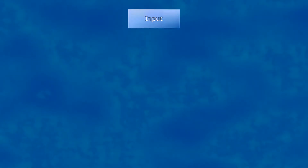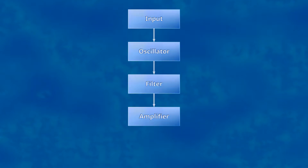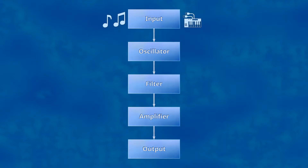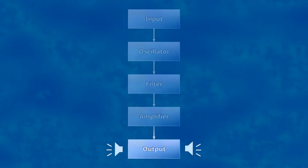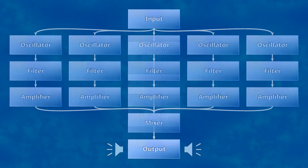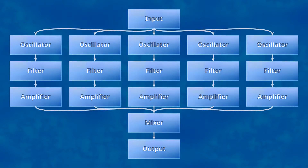We'll need something to tell us what notes to play and how loud, a way to turn notes into simple sound waves, and something to shape those simple waveforms to create more varied sounds. Notes come in at the top of this diagram and sound comes out at the bottom. If we want to play more than one note at a time, we'll need several copies of the middle section, mix them together, and send that to our speaker.